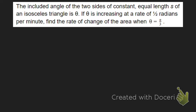It says the included angle of two sides of constant equal length S of an isosceles triangle is theta. Wow, that's a mouthful. Let's make a picture. So I know I've got some isosceles triangle.